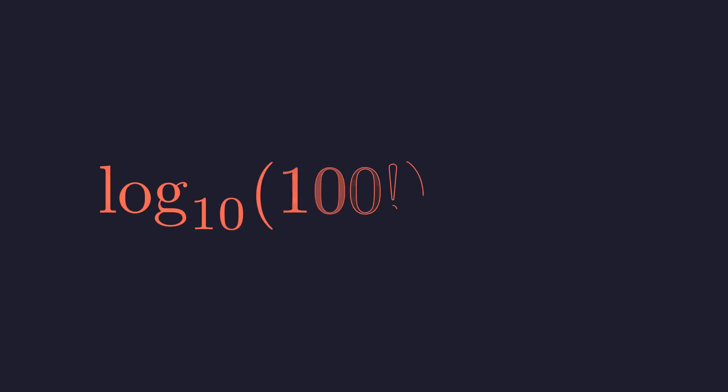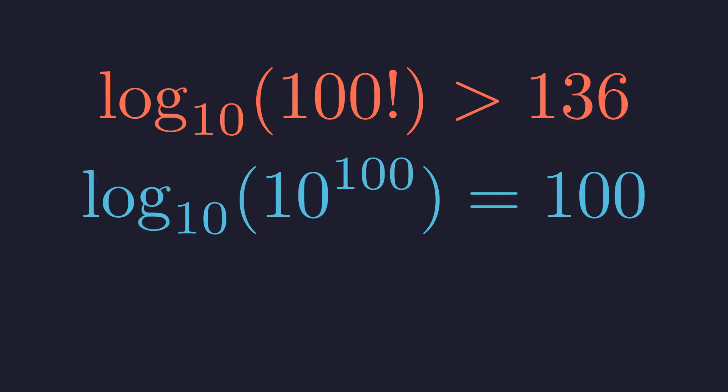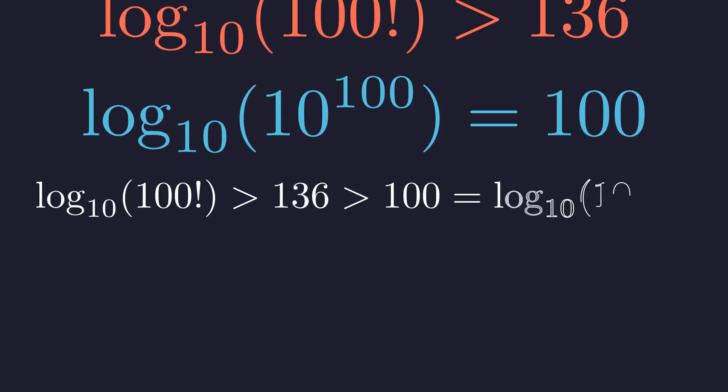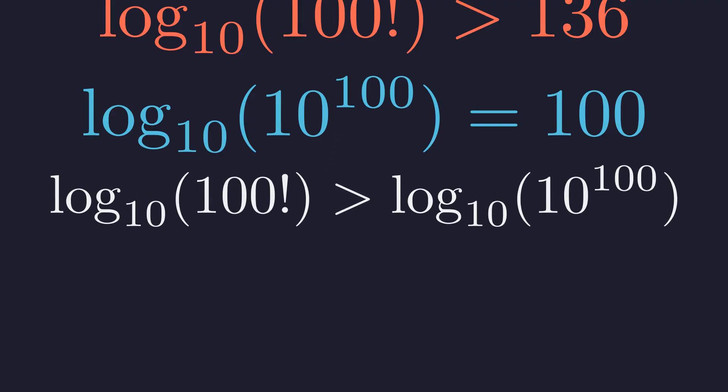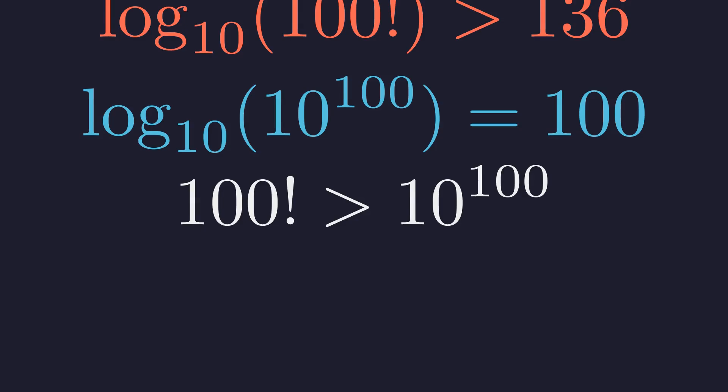Alright, let's bring it all together. The log of 100 factorial is bigger than 136. The log of 10 to the 100 is exactly 100. So log of 100 factorial is bigger than 136, which is obviously way bigger than 100. The log of 100 factorial absolutely dominates the log of 10 to the 100. And remember, if the logarithms satisfy this inequality, then so do the numbers themselves. 100 factorial is enormously, almost unimaginably larger than 10 to the 100th. Even though both numbers are huge, factorial growth eventually crushes exponential growth.